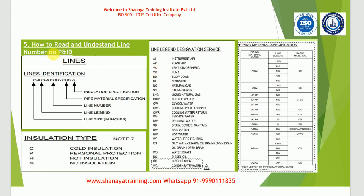In summary, we have discussed how to read and understand the line number on the P&ID. The line number philosophy is not fixed — it may change from project to project. However, certain information is always included: line legend designation services (what is flowing inside the line), piping material specification (with a detailed PMS sheet for each code, which determines instrument material selection — covered in the next session), and insulation type. All this information is available on the P&ID legend sheets.